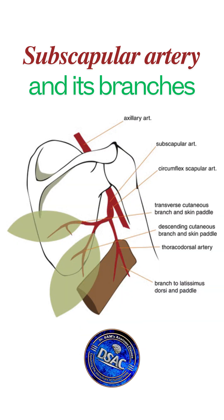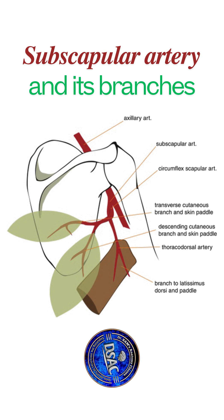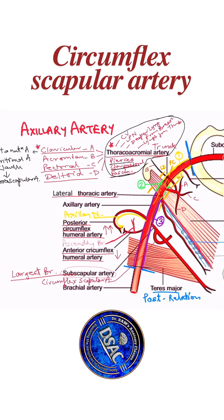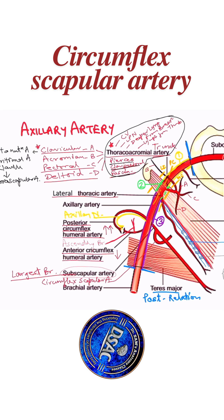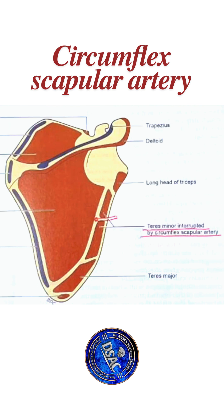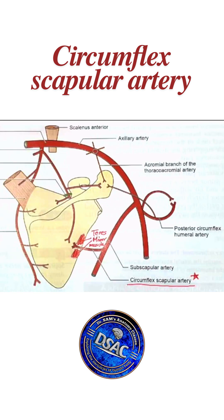While running along the lateral border of the scapula, the subscapular artery gives off a branch called the circumflex scapular artery. This branch is given out medially onto the dorsum of the scapula, reaching there by perforating the muscle teres minor, where it participates in the anastomosis on the back of the scapula.